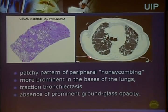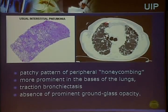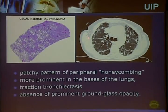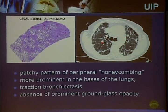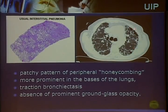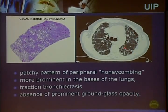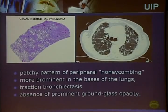On typical HRCT scanning, UIP shows patchy peripheral honeycombing, more prominent at the lung bases, with traction bronchiectasis mainly affecting the peripheral part of the lungs, and absence of prominent ground glass opacities.